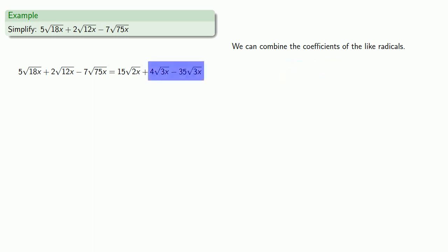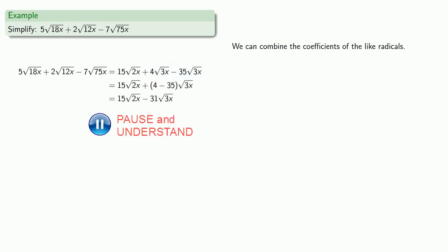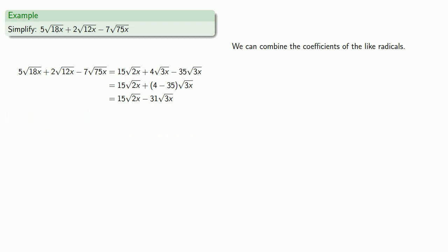So we'll subtract the coefficients of the like radicals. Since the remaining radicals are not the same, we can't combine them in any meaningful way, so we'll have to leave them as they are.